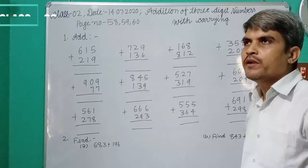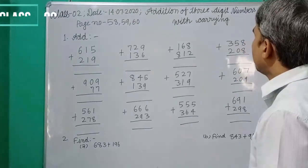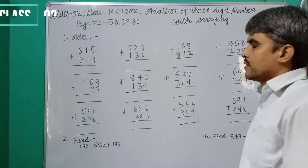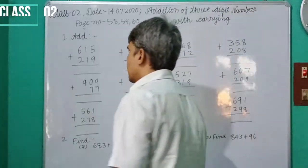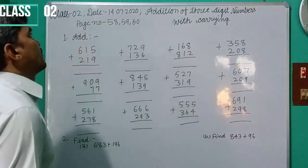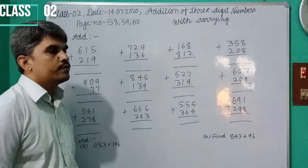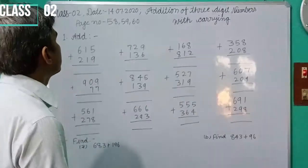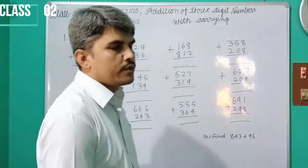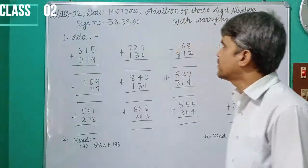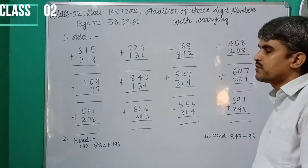All additions are not simpler additions because all additions have three digits with carrying. This video is for class 2, page number 58, 59 and 60.